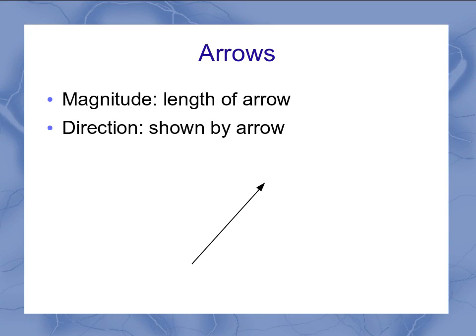An arrow, again, is one of our most common ways we represent that vector, where the length of the arrow represents the magnitude and the direction is shown by which way the arrow is pointing.